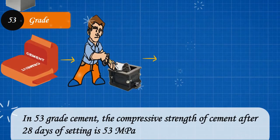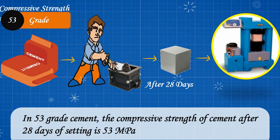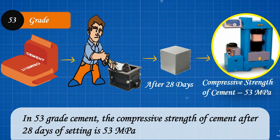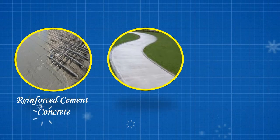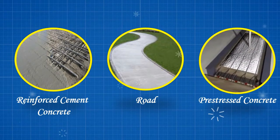In 53 grade cement, the compressive strength of cement after 28 days of setting is 53 megapascal. This type of cement is used for reinforced cement concrete, road, pre-stressed concrete, etc.